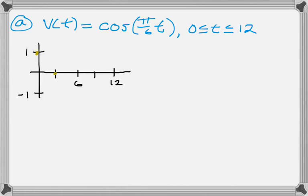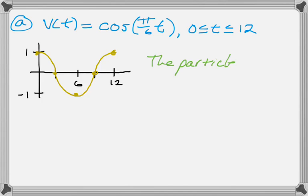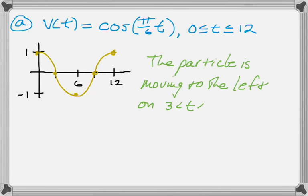So the graph goes: maximum, intercept, minimum, intercept, maximum — and then you can fill in the curve. When the particle is moving to the left is when the velocity is negative. You can see from the graph that the particle is moving to the left between 3 and 9, so on the interval from 3 to 9.